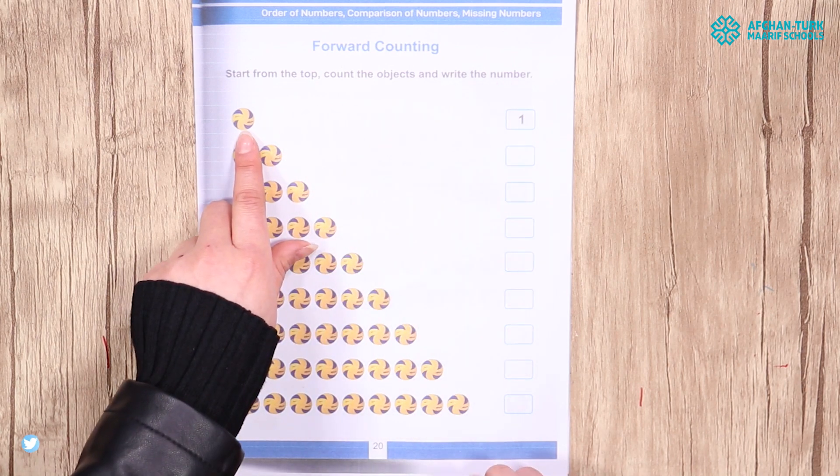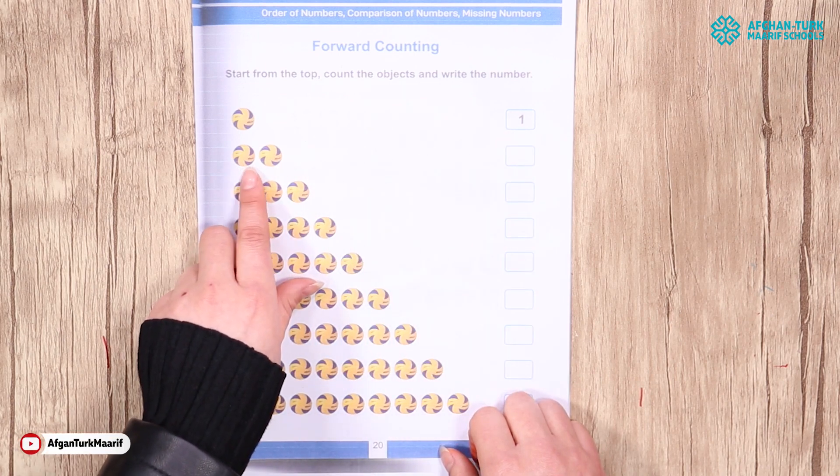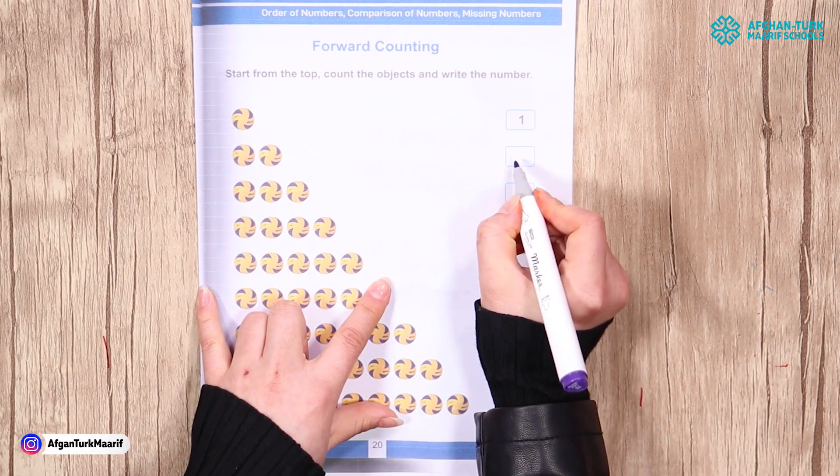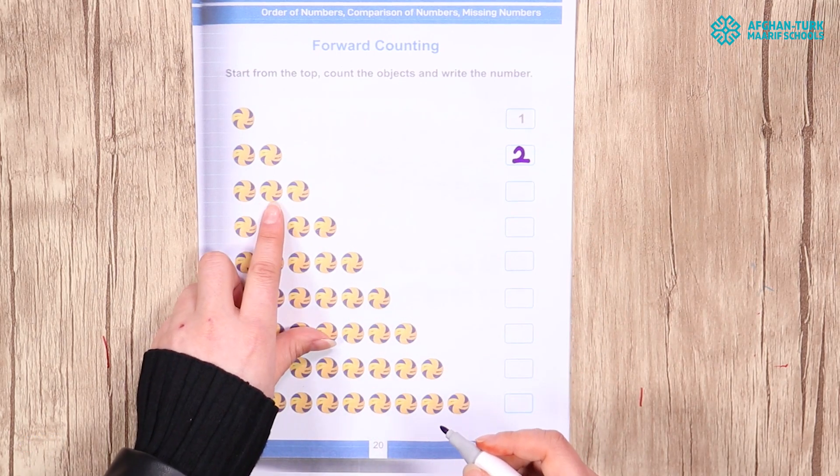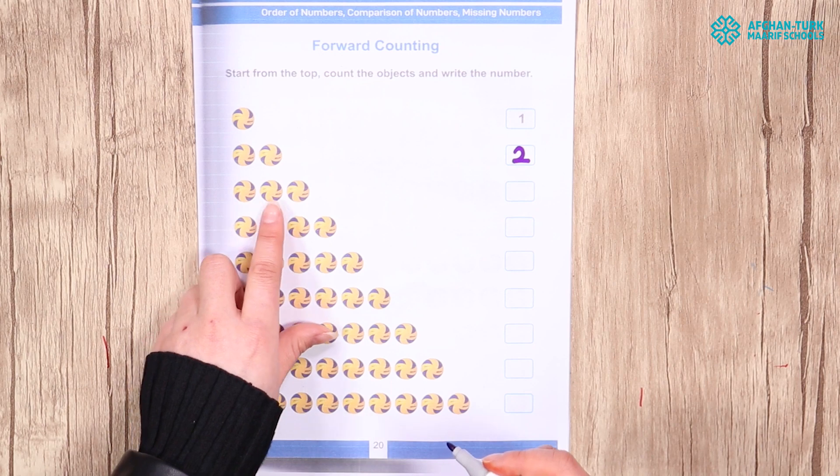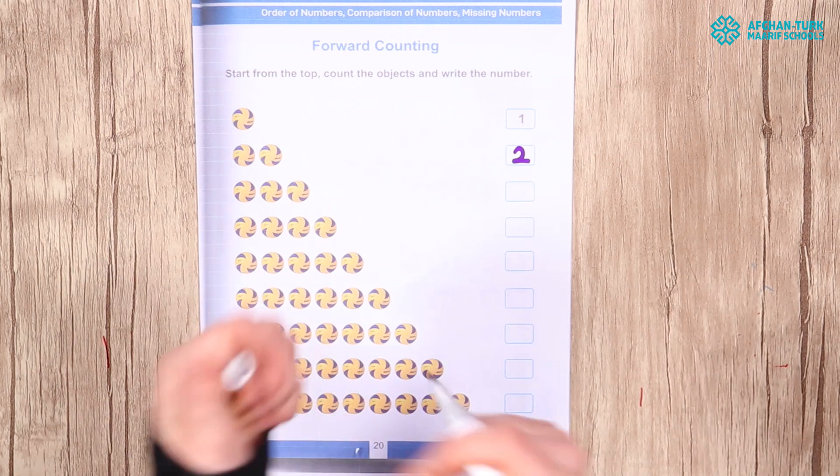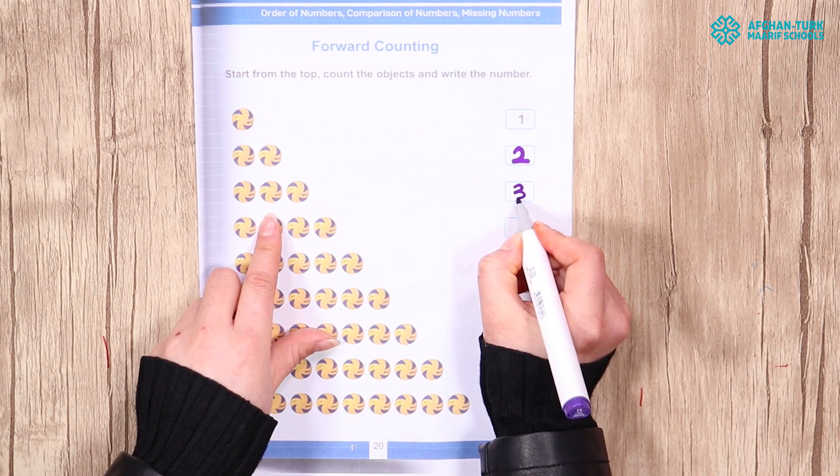We have one ball. How many balls do we have? 1, 2. Two. Here, how many balls do we have? 1, 2, 3. Perfect! It is three. We have three balls.